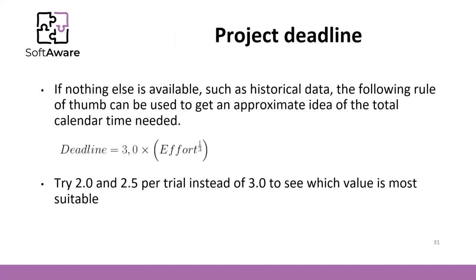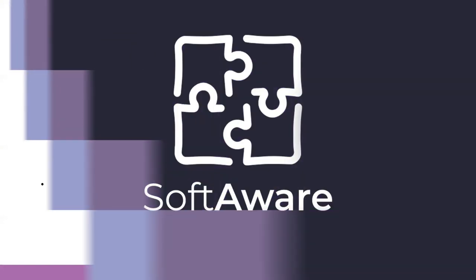If you don't have anything else to calculate the project timeline, you can use a rule of thumb formula — trying values of 2.5 or 2 instead of 3 to see which is most suitable. It will help you after making a thorough analysis of effort and duration as a reality check. We have more to say about time planning, and in the next video we will talk about issues that complement this time estimation of effort and duration. See you in the next video. Bye-bye.